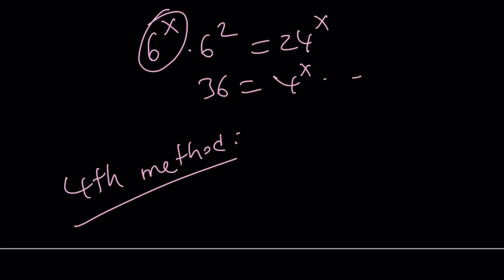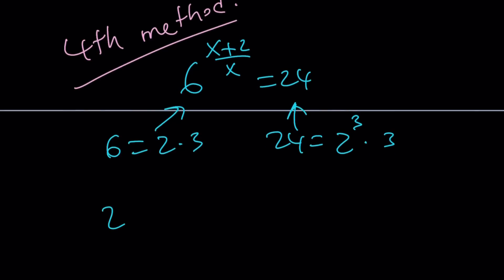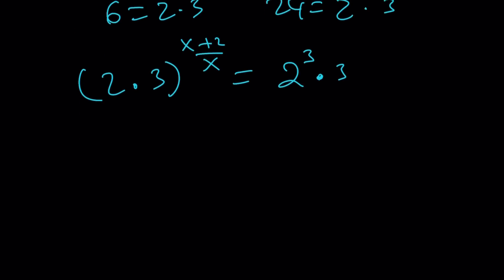For my fourth method, I'm going to do the following. This is given. And remember, I'm supposed to find 2 to the x. Here's what I'm going to do. 6 is 2 times 3. And 24 is 2 to the third times 3. Now, let's go ahead and do the replacements. We get 2 times 3 to the power x plus 2 over x equals 2 to the third times 3 to the power nothing. Let's distribute the exponent. 2 to the x plus 2 over x times 3 to the power x plus 2 over x equals 2 to the third times 3.